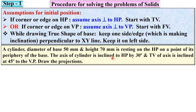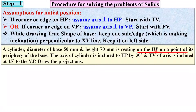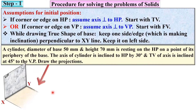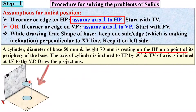Consider this example: a cylinder with a base diameter of 50 mm and height 70 mm, resting on HP on a point. Here, since a point is on the HP — a corner or edge on HP — you assume the axis is perpendicular to HP in the first stage. So you draw the first stage with axis perpendicular to HP, as shown.